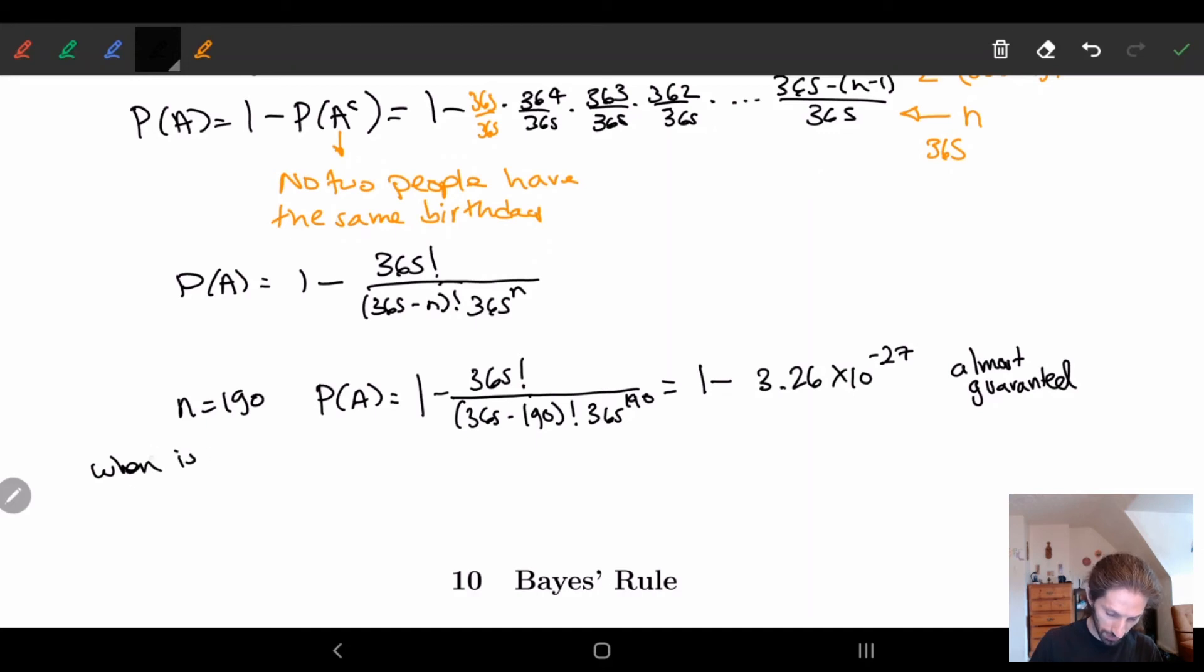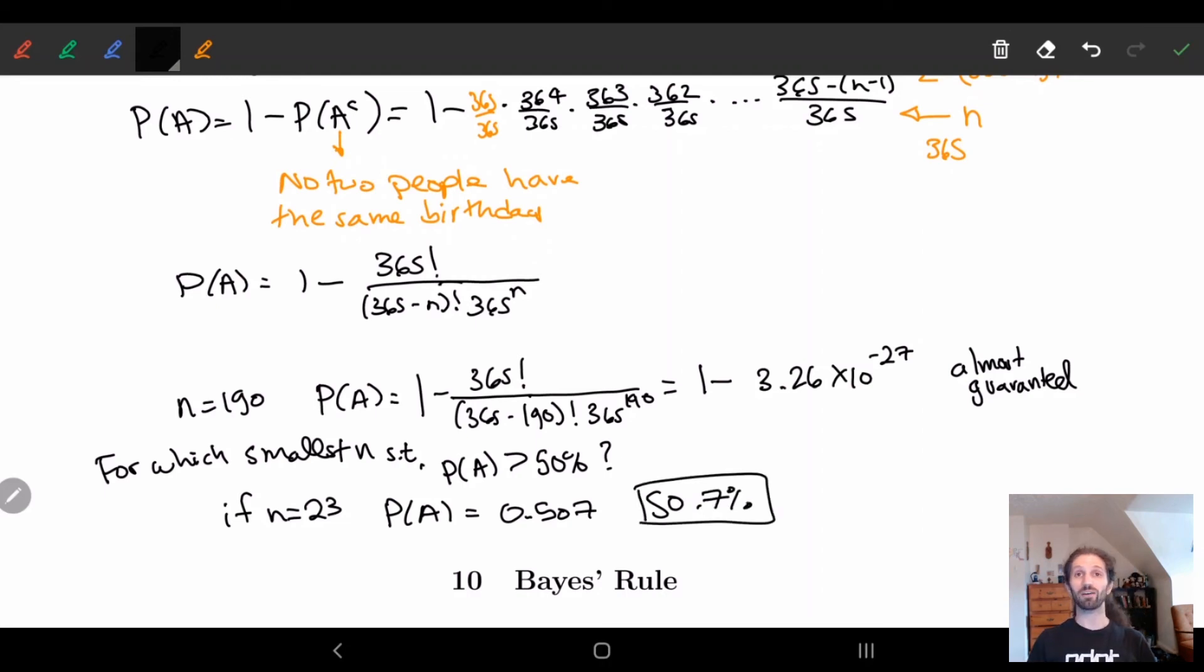But when do we get 50-50? What's the smallest n such that the probability of A is greater than 50 percent? It turns out if n equals 23, so if there's 23 people in a room, then the probability of A is 0.507. We have a 50.7% chance that two people will have the same birthday. That's it, 23, which is really really tiny.